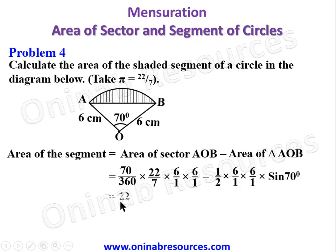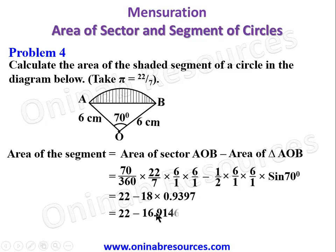From the calculator: the sector area gives 22, and ½ × 36 × sin 70° = 18 × 0.9397 = 16.915. Finding the difference gives approximately 5.085 square centimeters, which represents the area of the shaded segment of the circle.